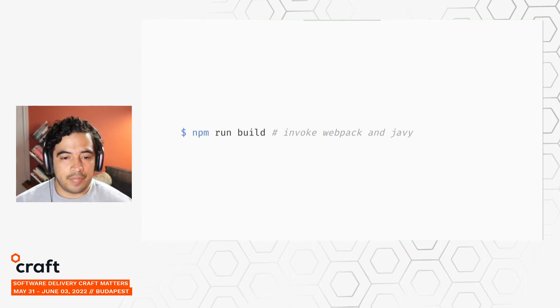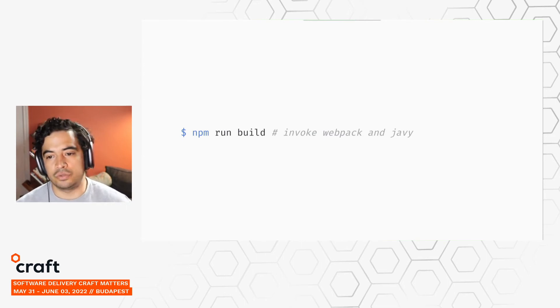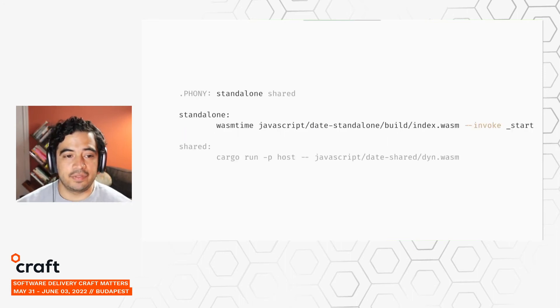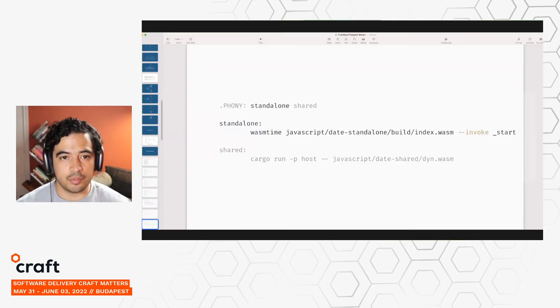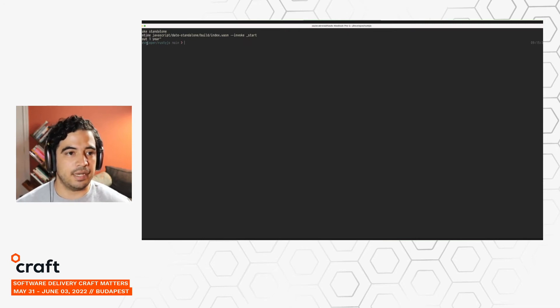If you run NPM run build, this invokes Webpack for the JavaScript build step and then Javi to get the final WebAssembly binary. In this project, I've defined a standalone target which uses WASM time to invoke that final WebAssembly binary and then invokes the start function. Let me run this in my terminal — if I run make standalone here, this invokes wasm time and it returns 'about one year', which is the difference between those two dates.